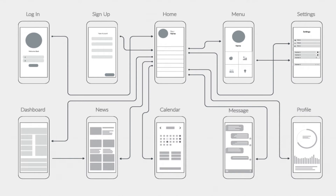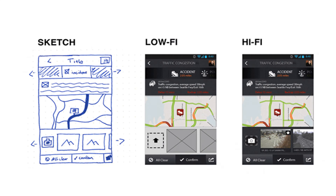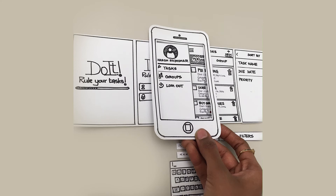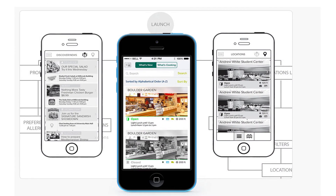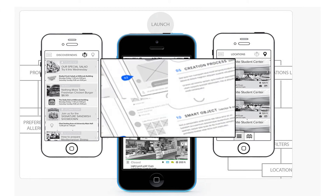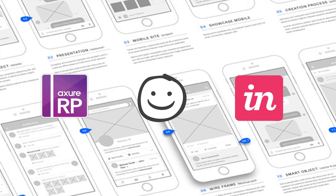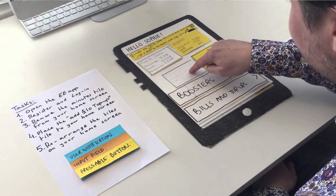The next stage is wireframing — low fidelity, high fidelity, and render types of wireframing. You can also create paper prototypes for web, mobile, and tablet. Rapid prototyping and sprints are used in the industry. At the WebD School, we teach you three tools: Axure, Balsamiq, and InVision — the most used tools in UX.